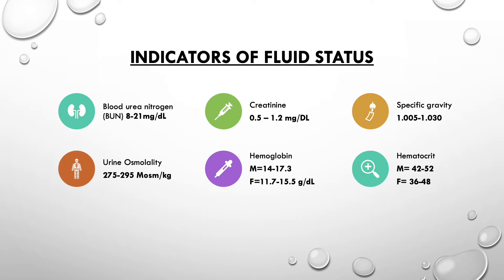There are six indicators of fluid status used to determine whether someone has low, normal, or excessive fluid. When fluid volume is low, lab values will be increased because substances are not being excreted and become highly concentrated. Conversely, when fluid volume is excessive, lab values will be decreased because greater fluid volume leads to greater transportation and excretion of these substances.